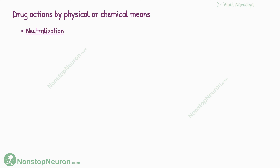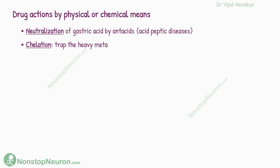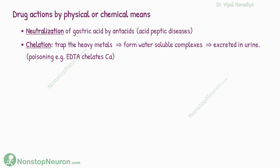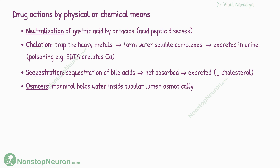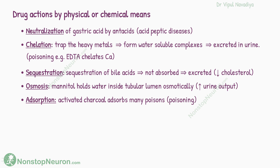Let's see some examples of physical or chemical mechanisms. First, neutralization — for example, neutralization of gastric acid with antacids, useful for acid-peptic diseases. Second, chelation — a chelating agent traps heavy metal and forms water-soluble complexes that are easily excreted in urine, useful in poisoning; for example, chelation of calcium by EDTA. Third, sequestration — cholestyramine sequesters bile acids in the intestine, increasing their excretion and helping reduce cholesterol levels. Fourth, osmosis — mannitol holds water in the lumen of the renal tubule by osmotic pressure, increasing urine output. Fifth, adsorption — activated charcoal adsorbs many poisons.